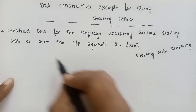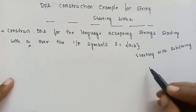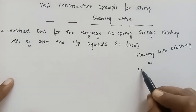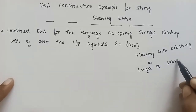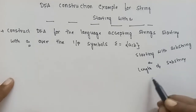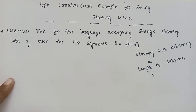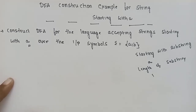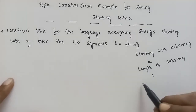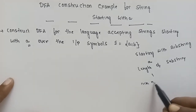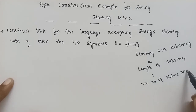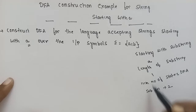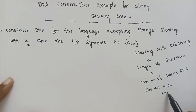Here the sub-string is A. So we identify the sub-string and find its length. The length of the sub-string is 1.